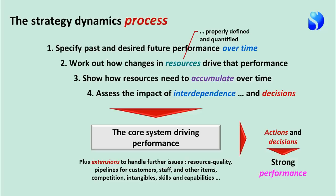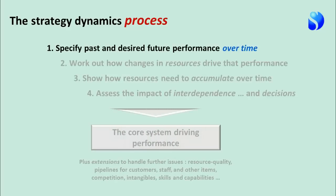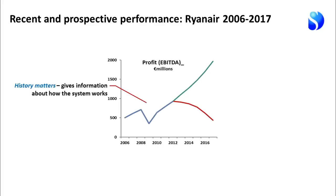We're going to concentrate mostly on the four main steps that build the picture of the core system. Specifying past and desired future performance over time is really very simple — it's a time chart. In this case it shows what has happened to EBITDA profit over the past five years and what might happen over the coming four years. It's important to recognize that history matters: it gives us information about how the system works and the decisions taken during that history that are still impacting current and future performance.